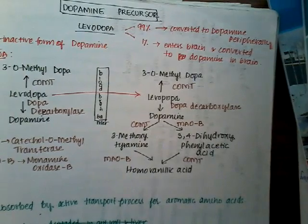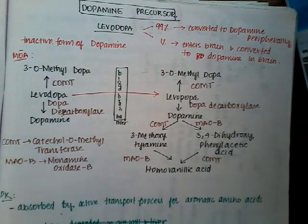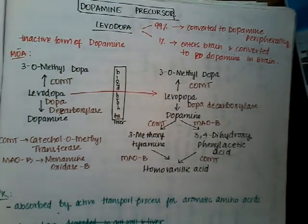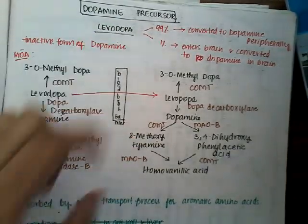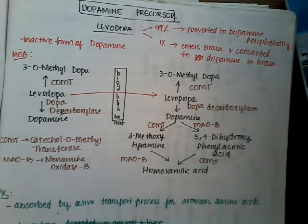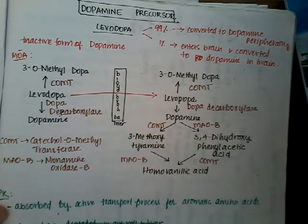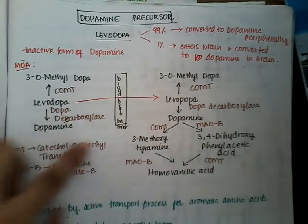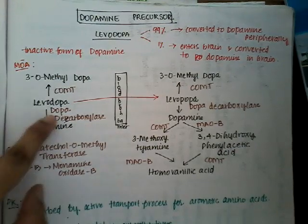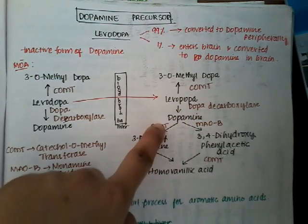The first drug is the dopamine precursor levodopa. If a person takes only levodopa, then 99% of that levodopa gets converted into dopamine peripherally, and only 1% of levodopa will enter the brain and get converted into dopamine.